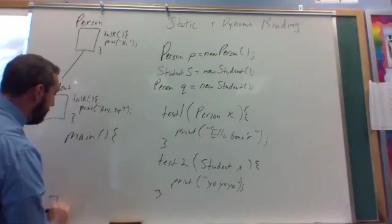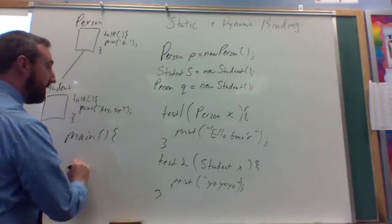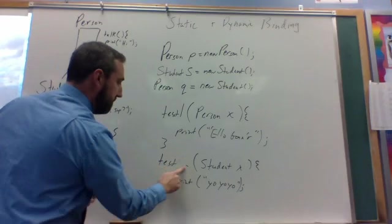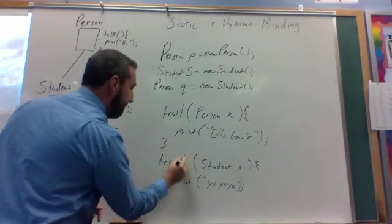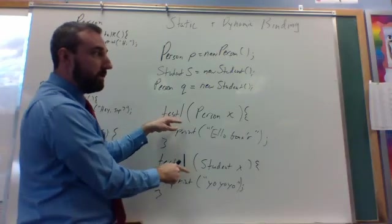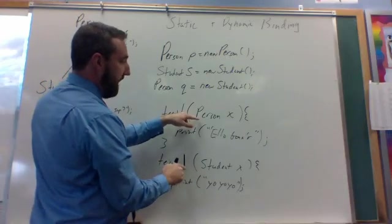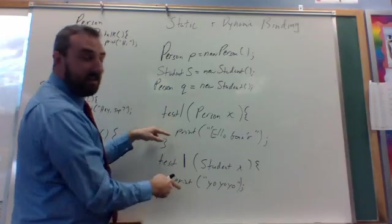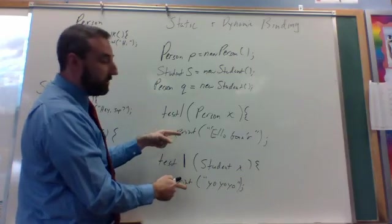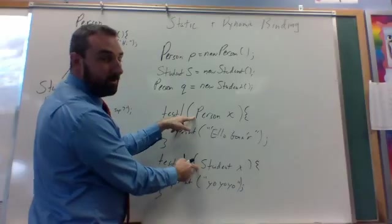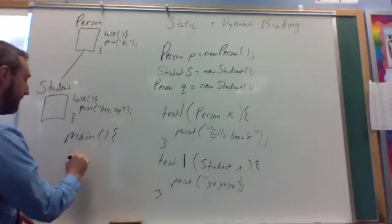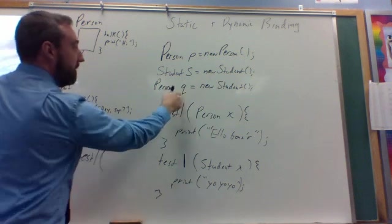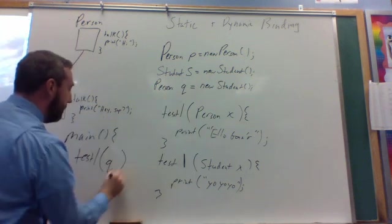And in our main method, we say, let's see. Oops, sorry. Both of these are going to get the same name, test one. So this is overloaded, meaning that I have two methods with the same name defined differently. The only thing that distinguishes between them is this one takes a person, this one takes a student. So if I go over here and I say test one, and I send q, it's going to say, oh, q is a person. So run this version.